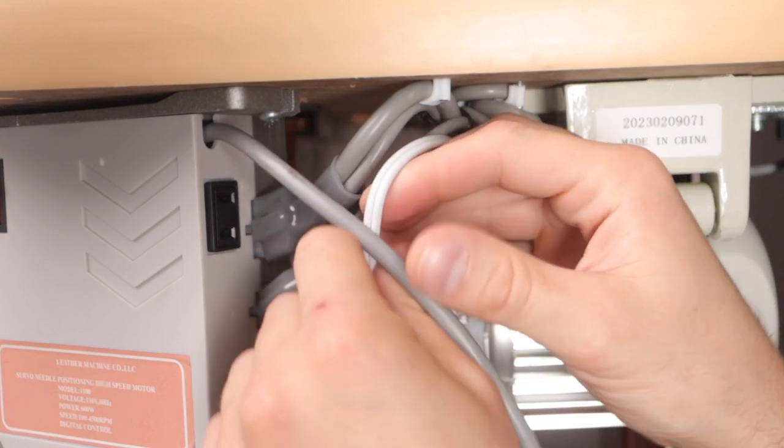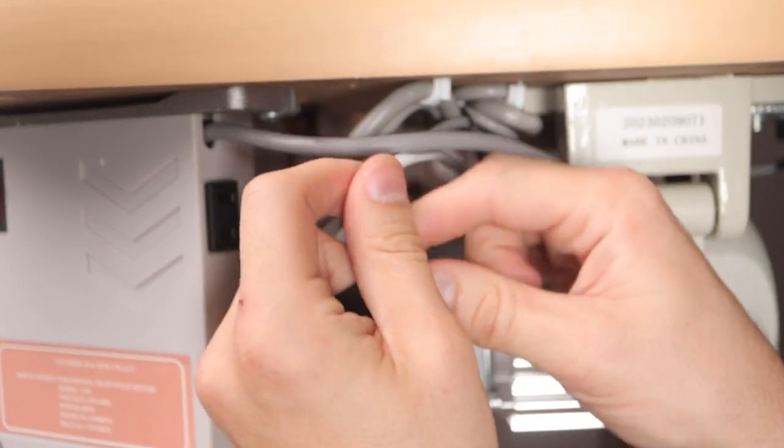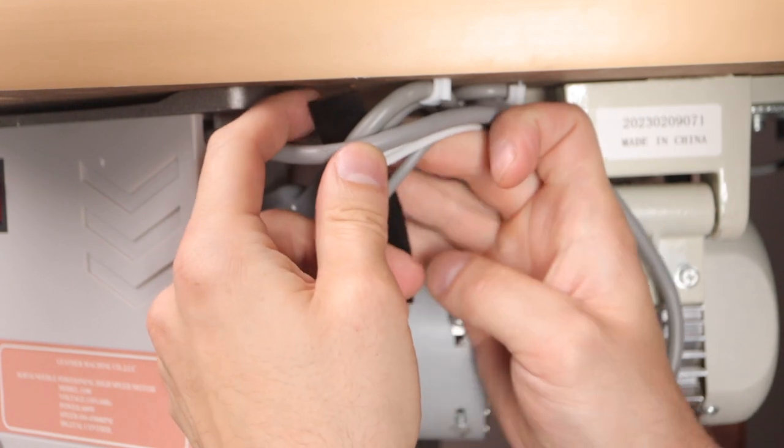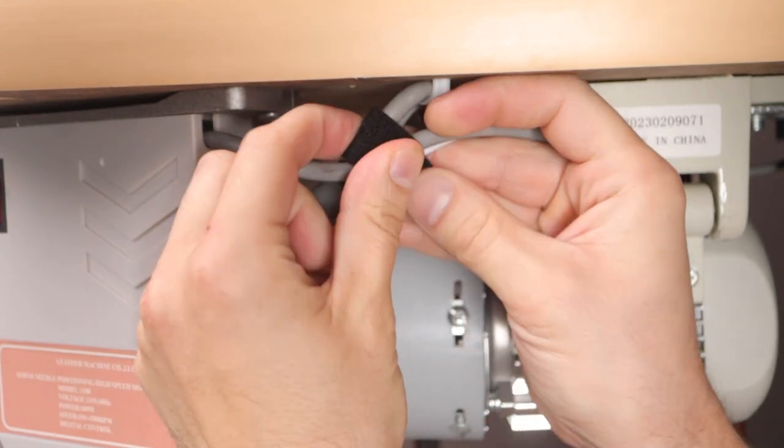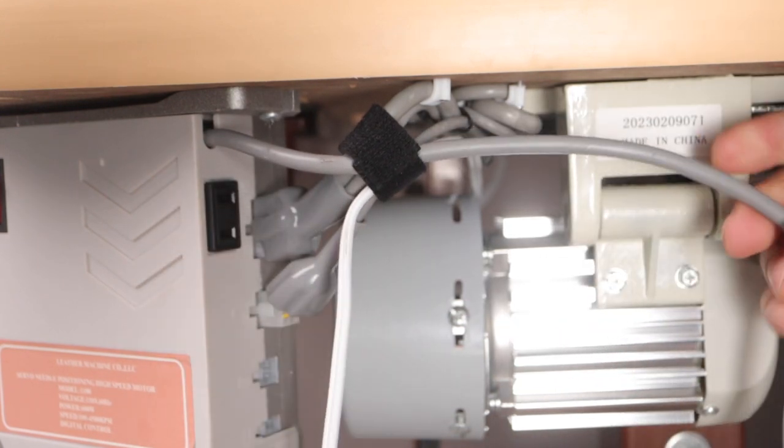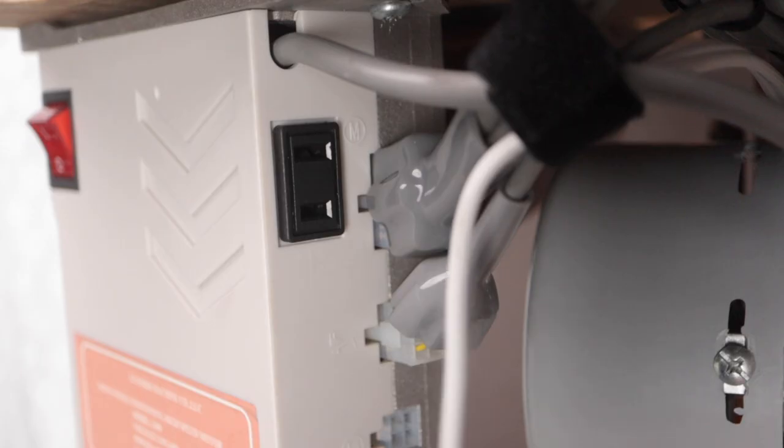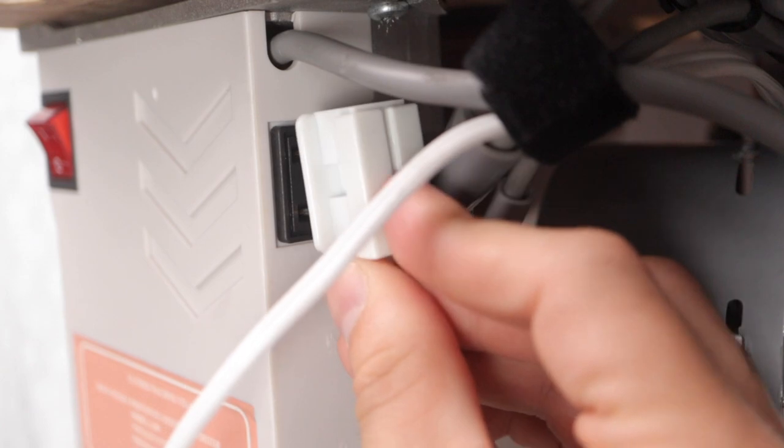Don't forget to do some cable management so that nothing gets in the way of fast moving belts. Here I'm just using some velcro or you can use some zip ties. Now you can plug the light into the power switch box in the back.